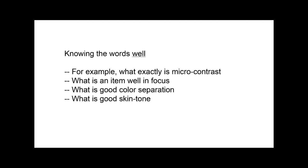Their brain did not have a reference point and a definition — no associations. The same with micro contrast, for example. Everybody thought their old photographs were good, excellent, until somebody gave a name to micro contrast, a definition, and an example — a reference point. Then all of a sudden everybody started looking at their old pictures and discovered they were not that good in terms of micro contrast. Everybody went out to buy new lenses. But before somebody gave it a name, a definition, and a reference point, nobody was actually seeing it — and it was right there in front of their eyes.